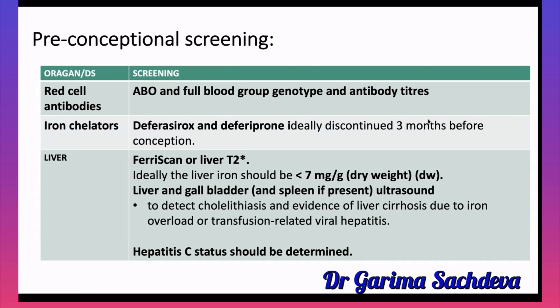Desferrioxamine is another iron chelator that can be given during pregnancy; it should be avoided in the first trimester and can be used after 20 weeks at low doses. For the liver, a ferriscan or liver T2-weighted MRI should be done; ideally liver iron should be less than 7 mg/g dry weight. Ultrasound of liver, gallbladder, and spleen should be done to detect cholelithiasis and liver cirrhosis. Hepatitis C status should also be determined in all chronically transfusion-dependent patients, even though hepatitis C is not part of routine antenatal screening.